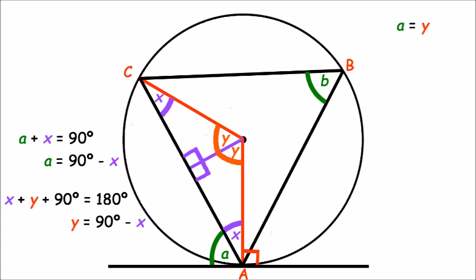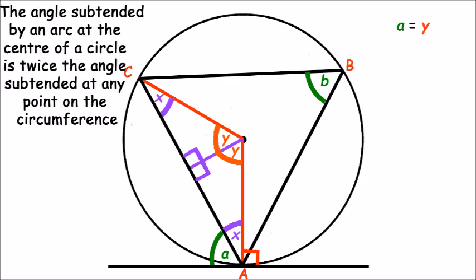Now we need to use another of our circle theorems which states that the angle subtended by an arc at the centre of a circle is twice the angle subtended at any point on the circumference. And so this means that the angle at the centre, which is 2Y, can be written in terms of B as 2B.